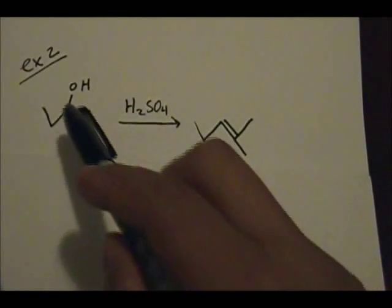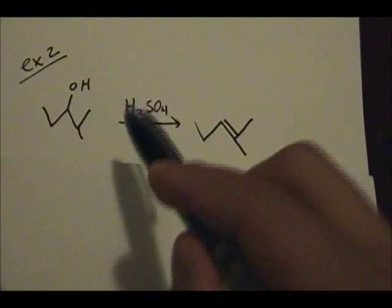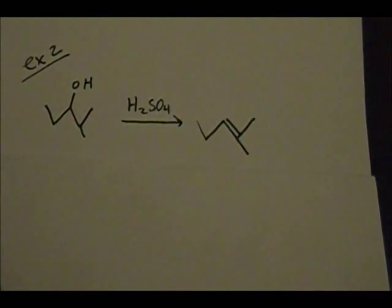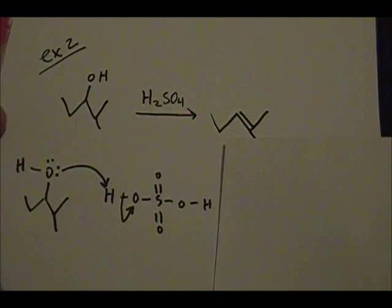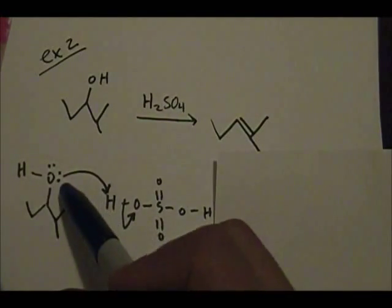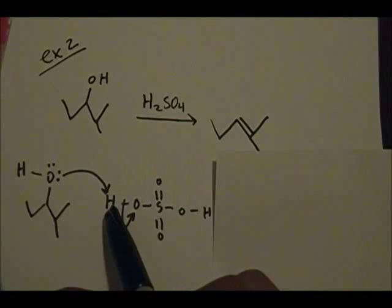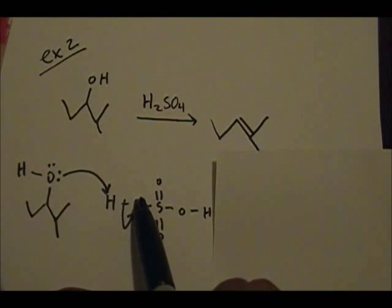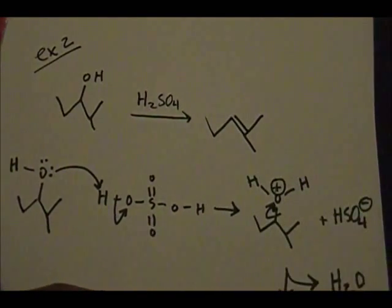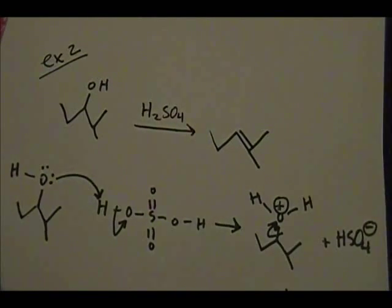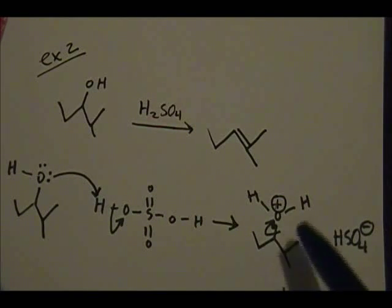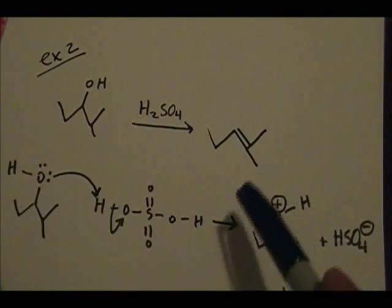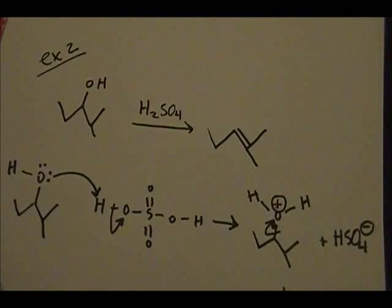This reaction will occur because this is a secondary alcohol — secondary and tertiary alcohols can react with H₂SO₄. The first step is H₂SO₄ reacting with the alcohol: the oxygen on the alcohol plucks a hydrogen off of H₂SO₄, the pair of electrons go into the oxygen. You generate HSO₄⁻ and an intermediate with a really good leaving group, which is soon to be water.